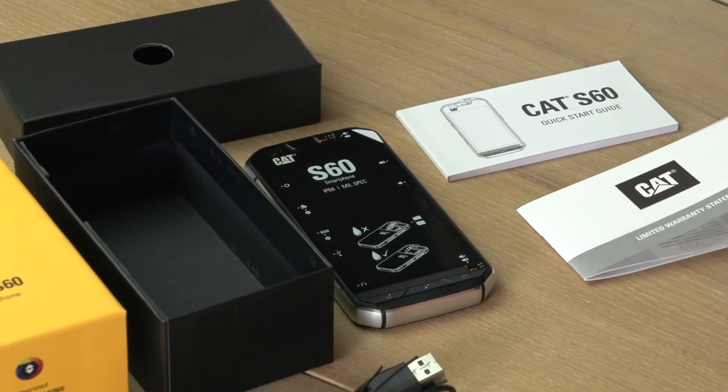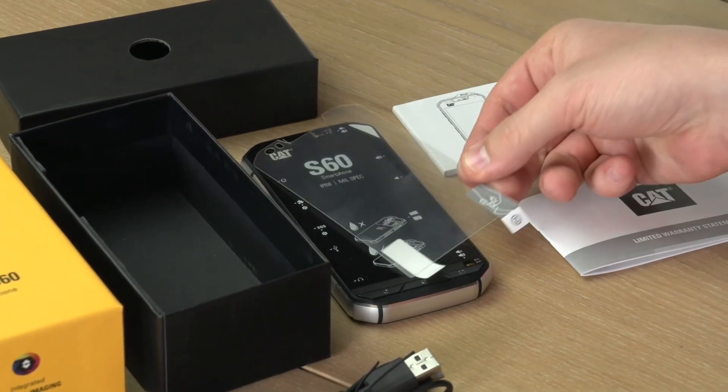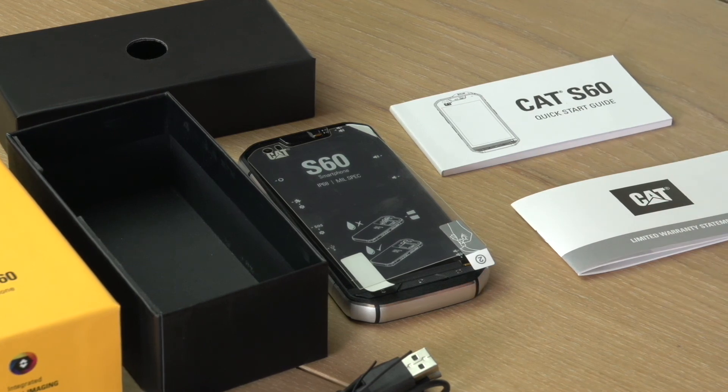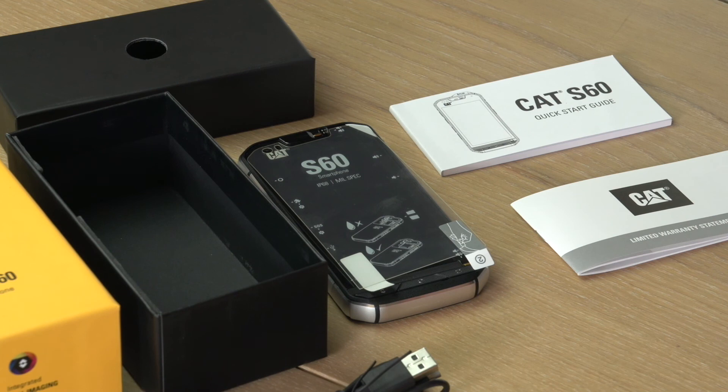You'll also find a free screen protector in the box. Now this device of course has a very tough screen already, the latest Corning Gorilla Glass 4 a millimeter thick, so really tough and well protected against drops but the screen protector here if you choose to use it will bring an extra layer of protection to the device.